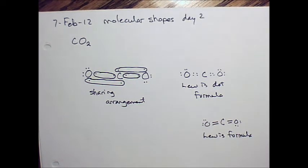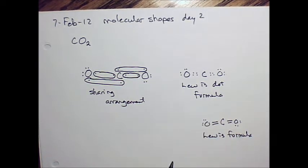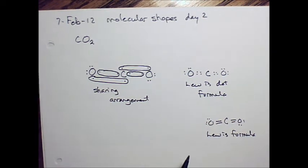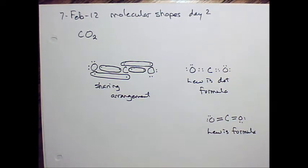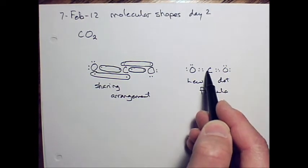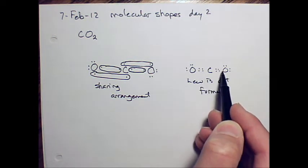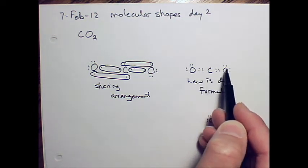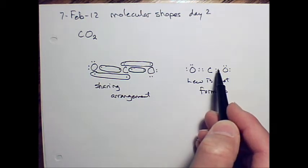All right, when we get to the three-dimensional shapes then, we're going to go back to the Lewis dot formula and count the sets of electrons around the central atom. And to remind you, sets, lone pairs make up sets, but all the electrons shared between two atoms make up a set as well. Well, in this case, we have a set of four electrons shared between these two atoms and four electrons here shared between these two atoms. So that's two sets around carbon.